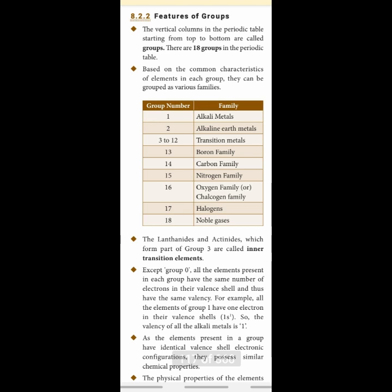As the elements present in a group have identical valence shell electronic configurations, they possess similar chemical properties. For example, the alkali metals — lithium, sodium, potassium, rubidium — all have similar chemical properties, which is why they fall under one particular group. The physical properties of elements may vary, but the chemical properties do not vary within a group. So group 1 is the alkali metal family, group 2 is alkaline earth metals, groups 3 to 12 are transition metals, then boron, carbon, nitrogen families, and so on.